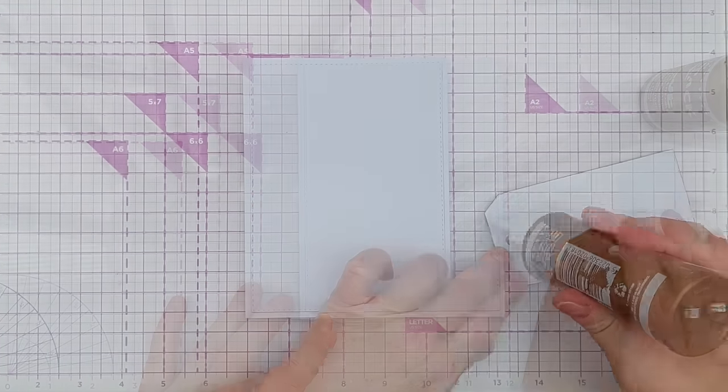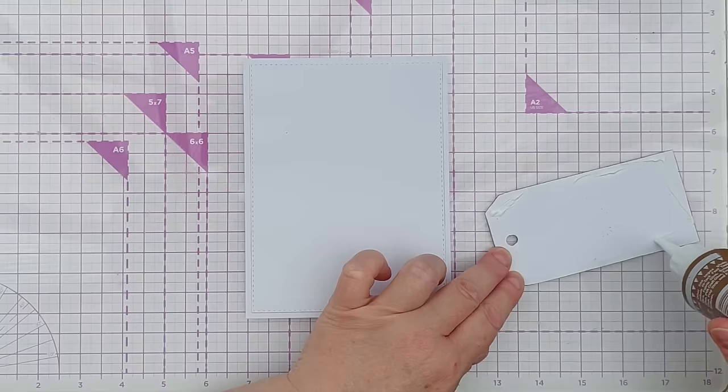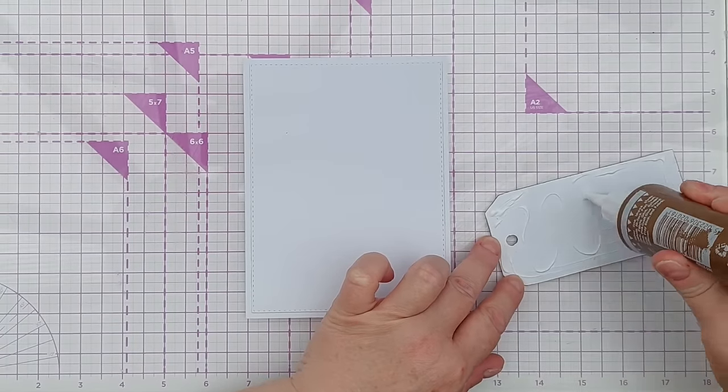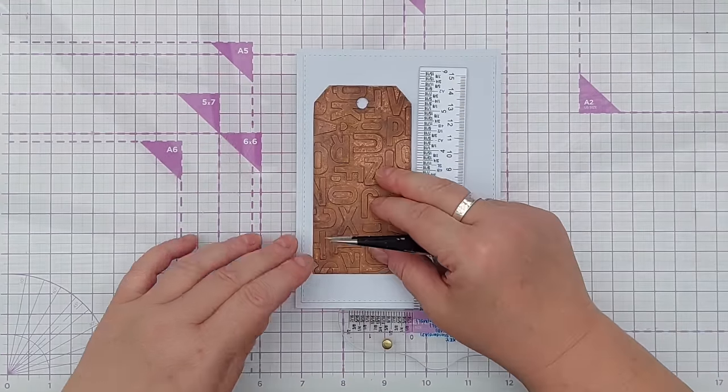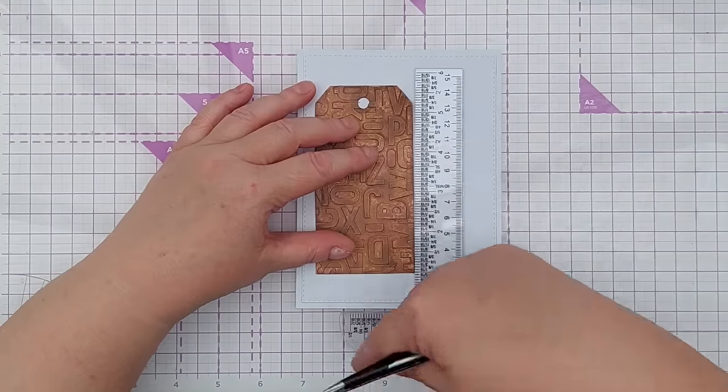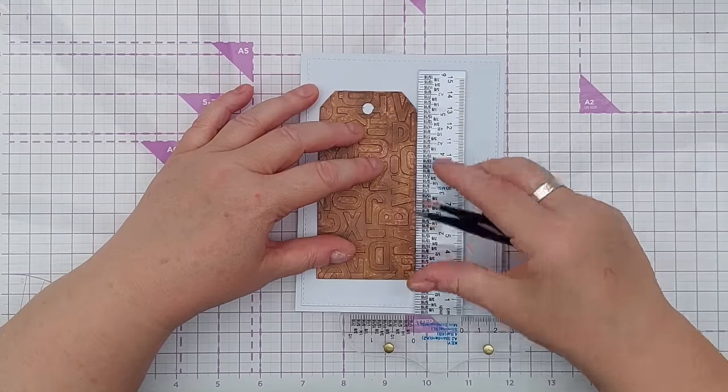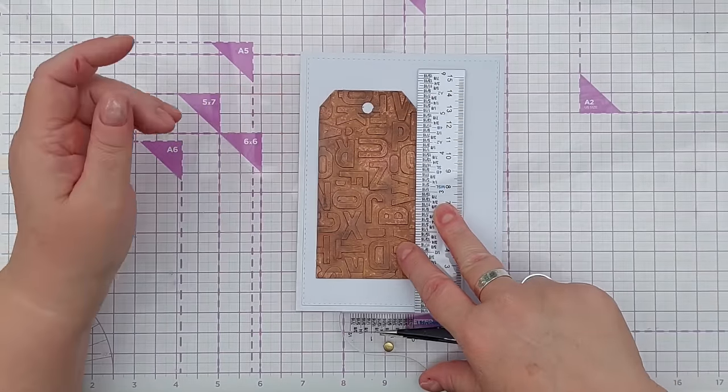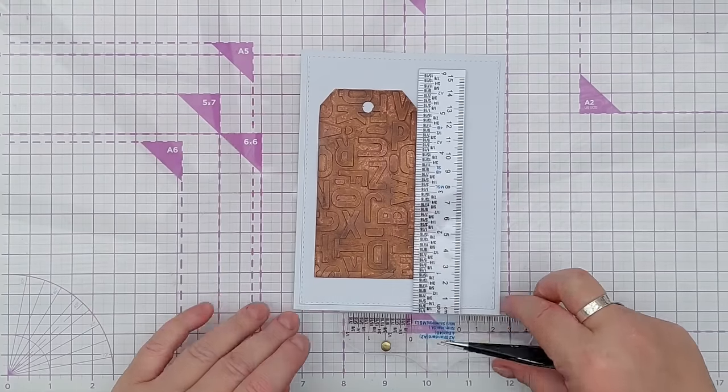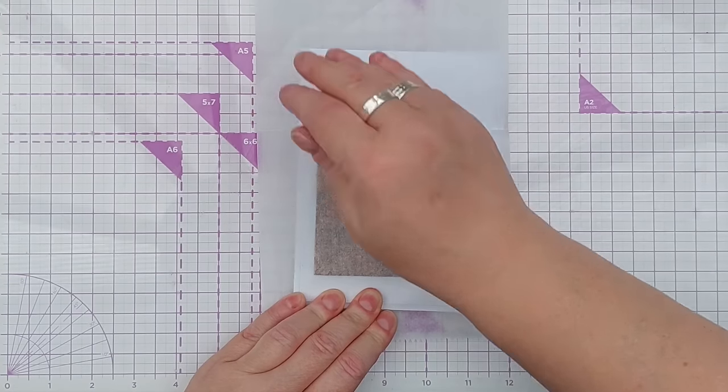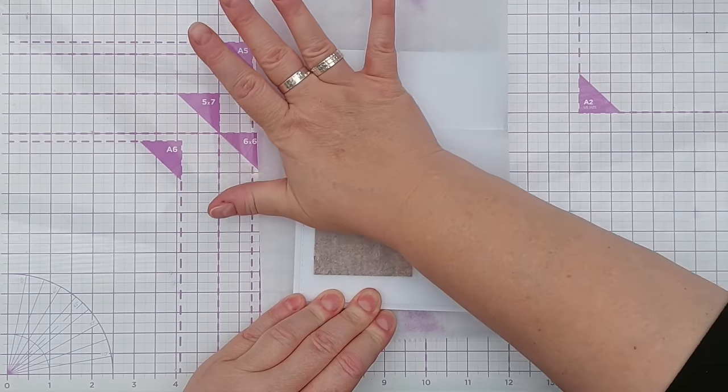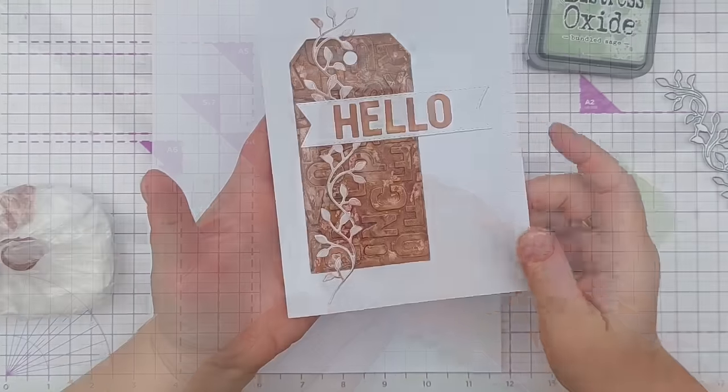And I'm going to glue this on to the left hand side again but I'm going to get it central I think, roughly central. I mean it doesn't have to be. When I say central I mean in the middle in this direction. I do want to get it straight but I think that will do. I'm going to get a clean sheet of deli paper and press that down and set it aside to dry.